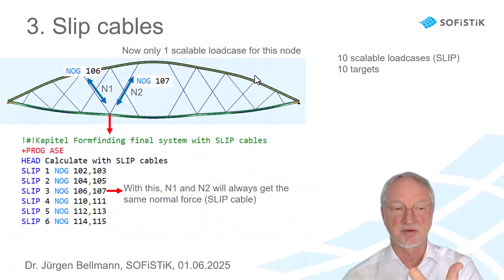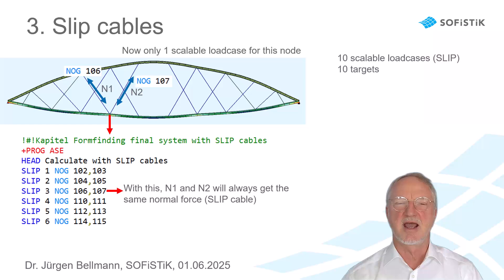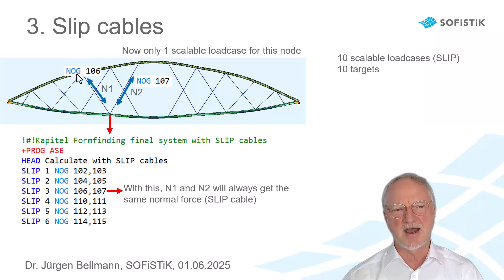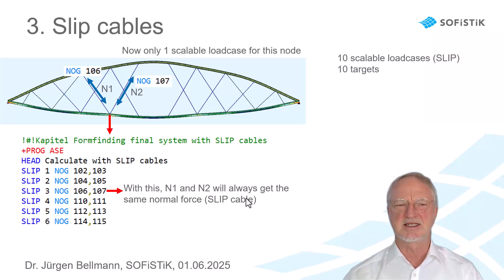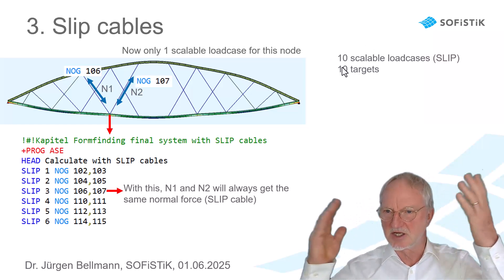Now we come to the third possibility: slip cables. Without optimization you can also use slip cables for membrane form finding or other applications — there are examples in the example folders. We define our slip cable group number 3 with two elements, 106 and 107. With this line we define that normal force 1 and normal force 2 will always get the same normal force — the slip cable — so the cable is really one cable that can slip around this point. With this feature we have 10 scalable load cases and 10 targets, perfect for the optimization.